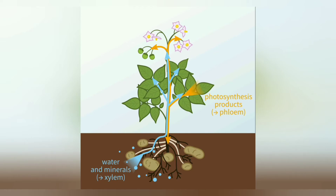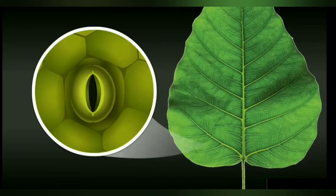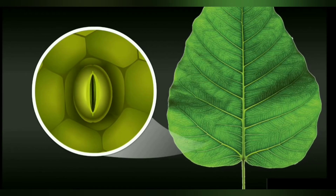The tubes that carry water and minerals from the roots to the leaves are called xylem. The tubes that carry food from the leaves to other parts of the plant are called phloem.